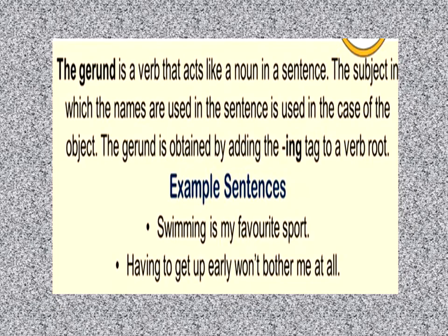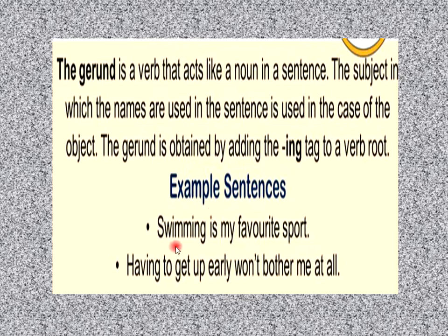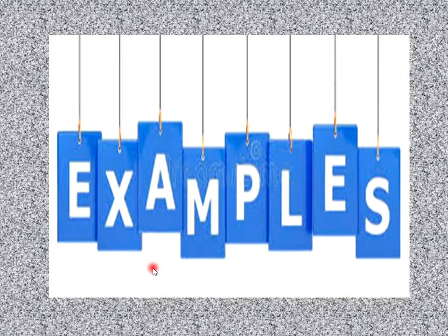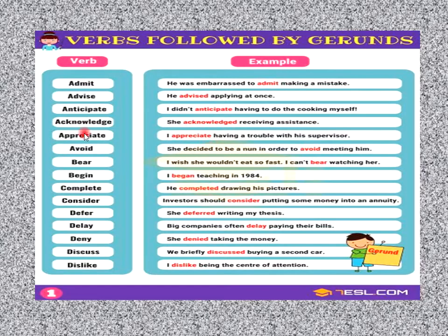The gerund is a verb that acts like a noun in a sentence. It can be used as the subject or object of a sentence. The gerund is obtained by adding the -ing tag to a verb root. For example, 'swimming is my favorite sport' and 'having to get up early won't bother me at all.' Here, swimming and having are gerunds.